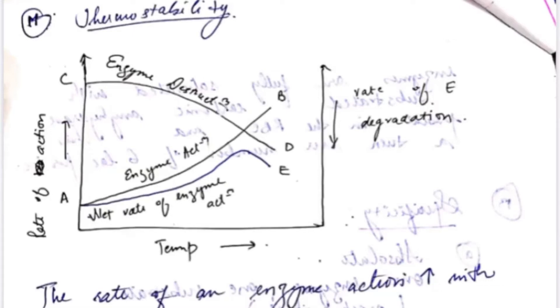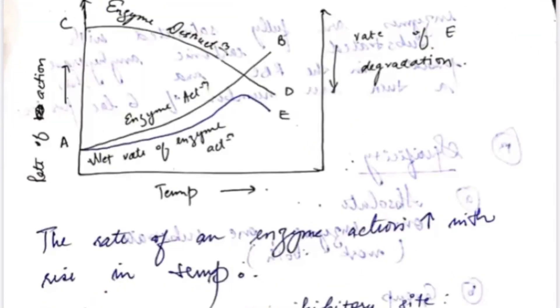The next property of enzymes is thermostability, meaning the rate of enzyme action increases with a rise in temperature. A graph has been drawn showing how the rate of enzyme activity increases with increasing temperature.